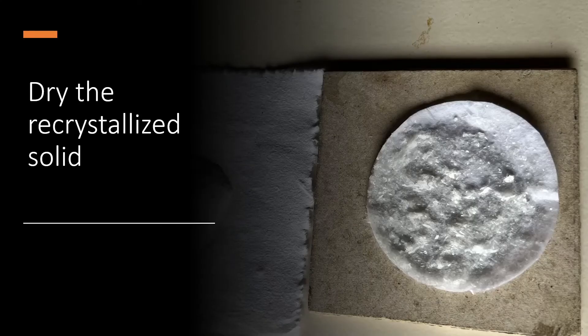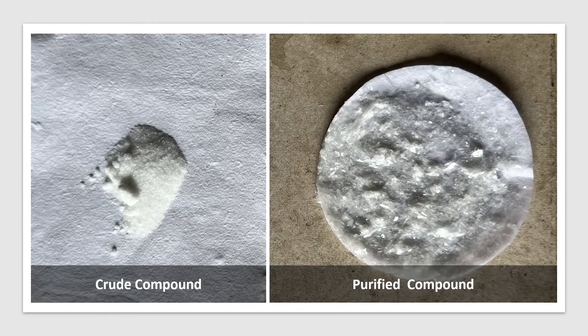The next step is to dry the purified solid. Here you can see your crude compound and your purified compound. After purification, we get large shiny crystals of the compound. This compound is now free from soluble and insoluble impurities.